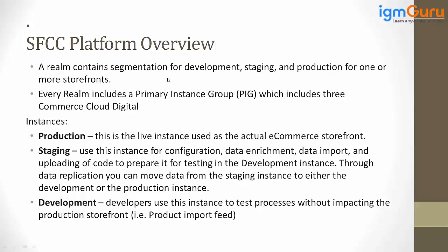For example, if an organization has one or two brands, they can run one REALM and create multiple sites inside it. Just have an idea that REALM plays a role in differentiating environments — development, staging, and production. Every REALM includes a Primary Instance Group, called PAG, and a Secondary Instance Group, called SAG. The PAG instance groups are production, staging, and development.